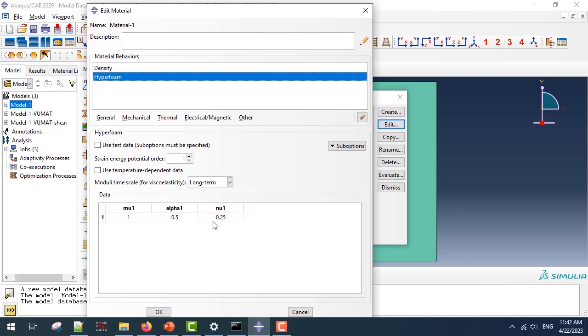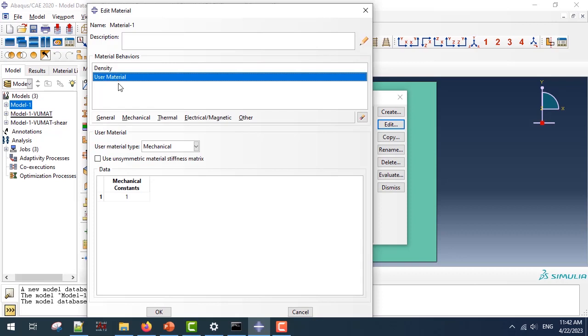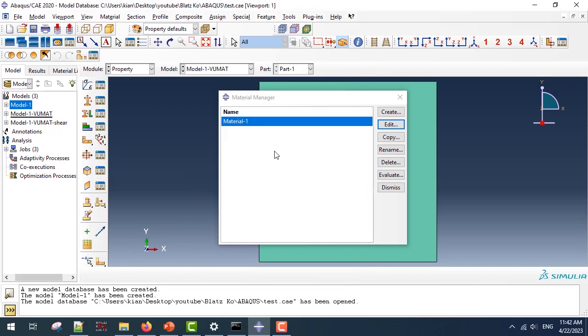For the first one, I'm going to use the hyperfoam model and use the exact parameters of the simplified Blatz-Ko model as I've shown you in the PowerPoint, and the second one uses the VUMAT and it only has one input in which mu is equal to one.